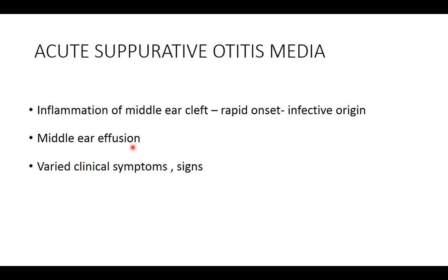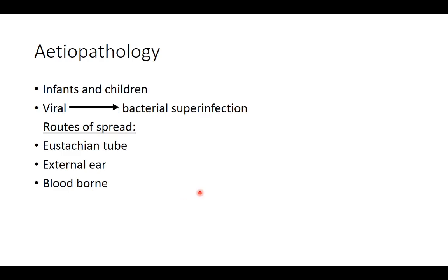In the initial stages the effusion will be serous fluid, but in later stages it will contain pus. ASOM affects infants more commonly than older children. To begin with, the infection is viral in nature and then later it becomes a bacterial superinfection.